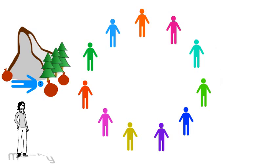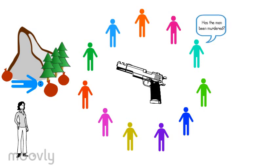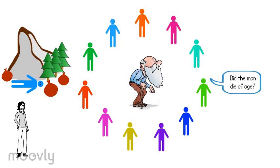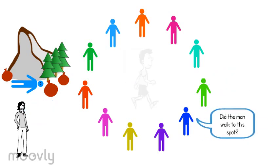The first participant asks, has the man been murdered? The trainer answers with a simple yes or no. In this case, no. Did the man die of age? No. Did the man walk to this spot? No.